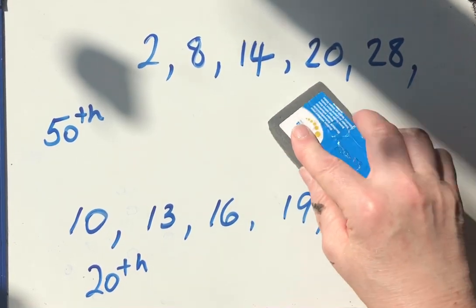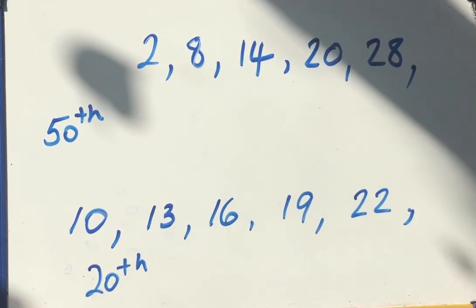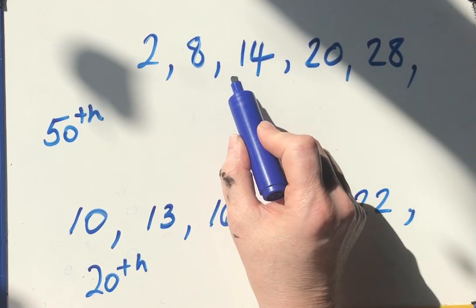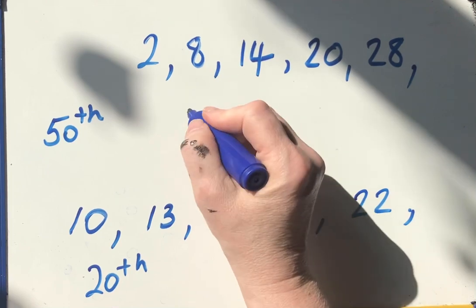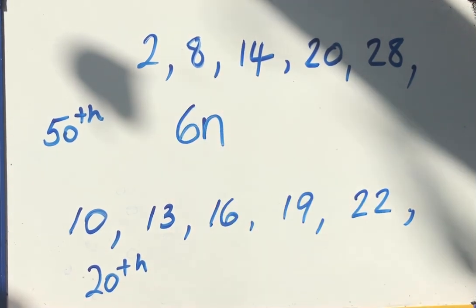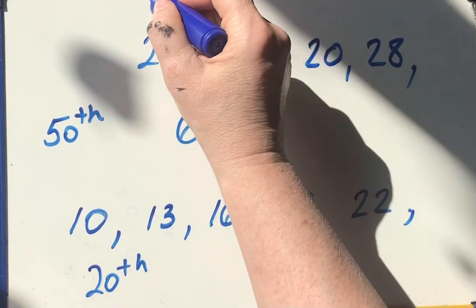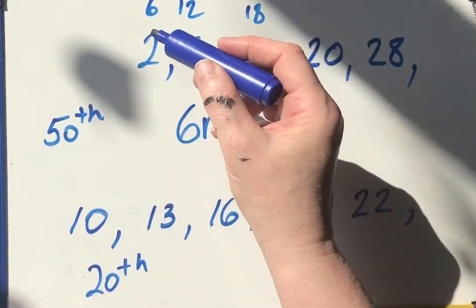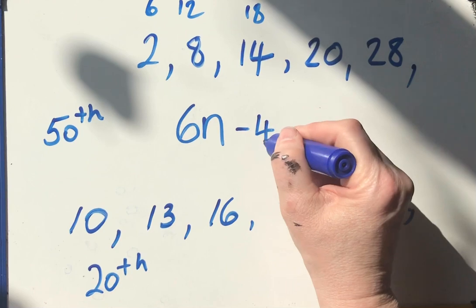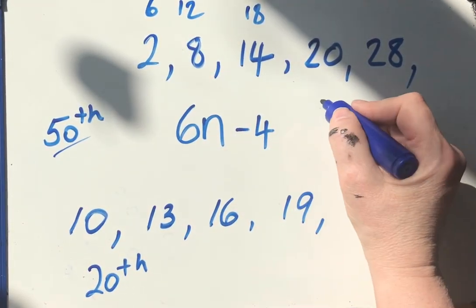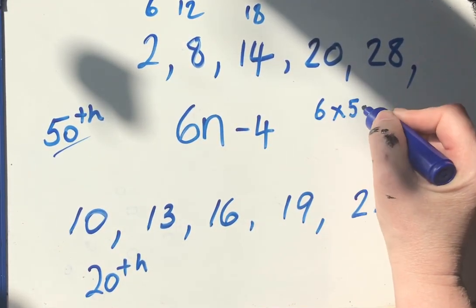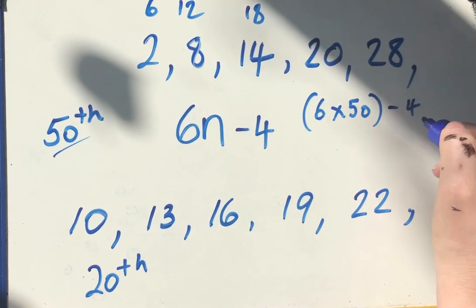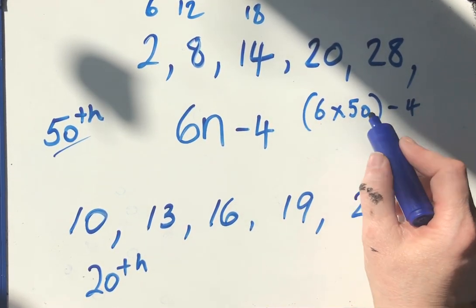Okay, so you've paused, you've had a go. Hopefully, let's see if you were correct in finding first of all the nth term. Well in this one I'm adding six, so it is the six times table. But the six times table goes 6, 12, 18 and so on. So 6n take away 4, that gives me the nth term. So the 50th is 6 times 50 and then I've got to subtract 4. 6 fives are 30 times 10 is 300, take away 4.